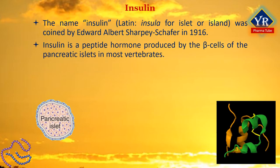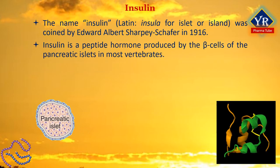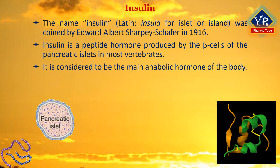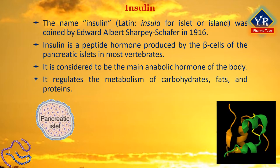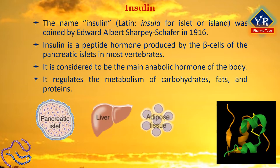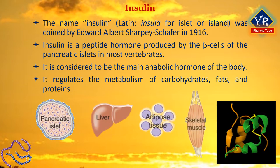Insulin is a peptide hormone produced by the beta cells of the pancreatic islets in most vertebrates. It is considered to be the main anabolic hormone in the body. It regulates the metabolism of carbohydrates, fats and proteins by promoting the absorption of glucose from the blood into liver, fat and skeletal muscle cells.